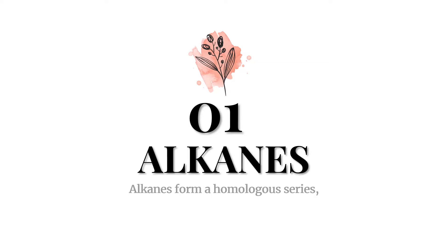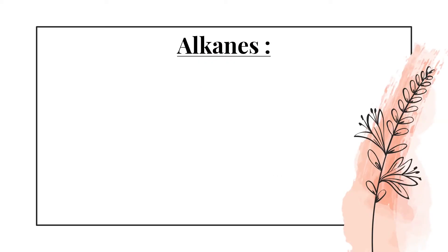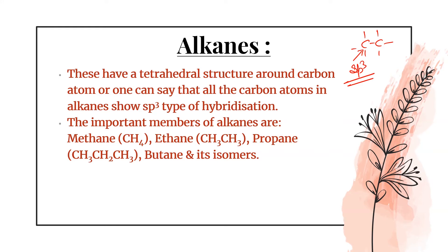Alkanes have the general formula CₙH₂ₙ₊₂ and form a homologous series — where two consecutive members differ by a CH₂ group. All carbon atoms in alkanes show sp³ hybridization because they have only single bonds, with valencies satisfied by hydrogen. The important members are methane, ethane, propane, butane and its isomers, which we will study in more detail in this chapter.